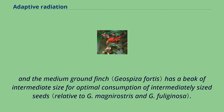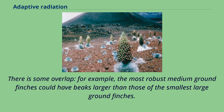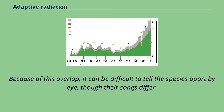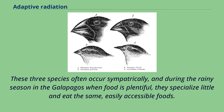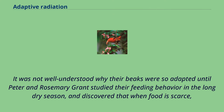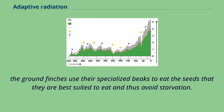There is some overlap — for example, the most robust medium ground finches could have beaks larger than those of the smallest large ground finches. Because of this overlap, it can be difficult to tell the species apart by eye, though their songs differ. These three species often occur sympatrically, and during the rainy season in the Galapagos when food is plentiful, they specialize little and eat the same easily accessible foods. It was not well understood why their beaks were so adapted until Peter and Rosemary Grant studied their feeding behavior in the long dry season and discovered that when food is scarce, the ground finches use their specialized beaks to eat the seeds they are best suited to eat and thus avoid starvation.